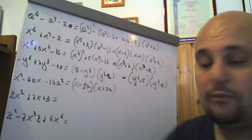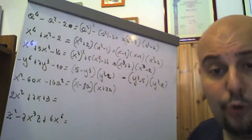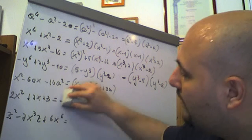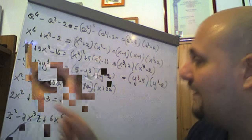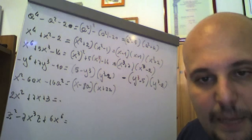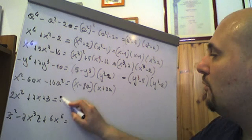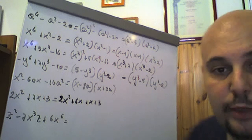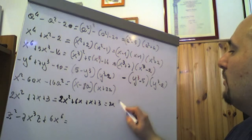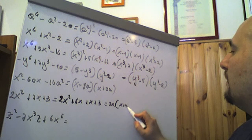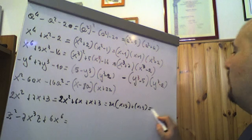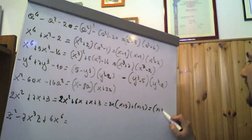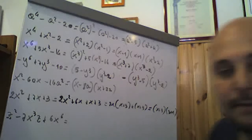2x² + 7x + 3 non è un trinomio notevole perché ha coefficiente 2 davanti a x². Moltiplichiamo il termine noto 3 per il coefficiente 2: fa 6 = 6 × 1, e 6 + 1 = 7. Quindi scriviamo 2x² + 6x + x + 3, raccogliamo 2x dai primi due termini ottenendo 2x(x + 3), poi 1(x + 3). Raccogliendo (x + 3) a fattore comune: (x + 3)(2x + 1).